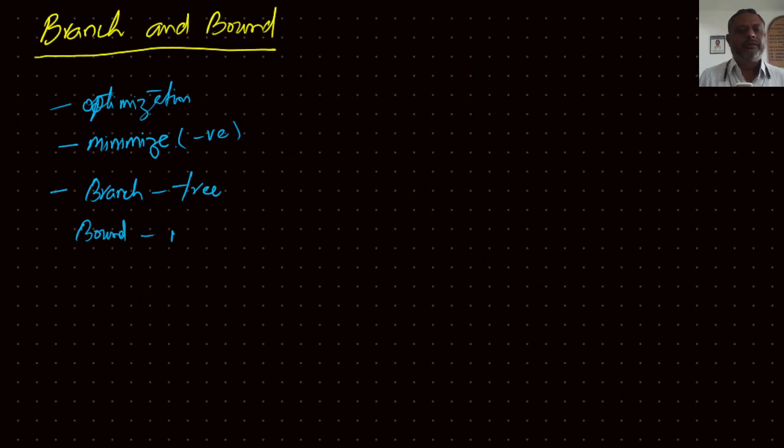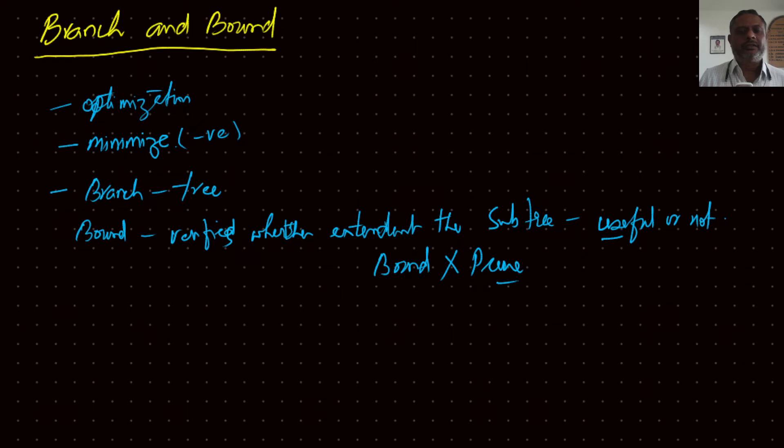This bound verifies whether extending the sub-tree is useful or not. And if you are sure that it is not going to help in extending that sub-tree, we can just bound it and prune the tree. So that means from that onwards the tree won't grow in that direction. So if you just keep looking at what happens...